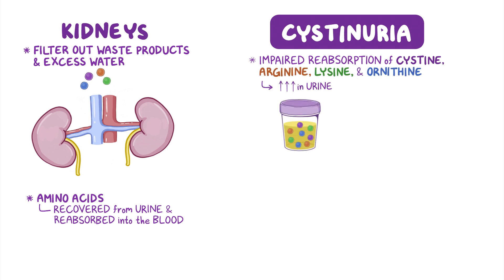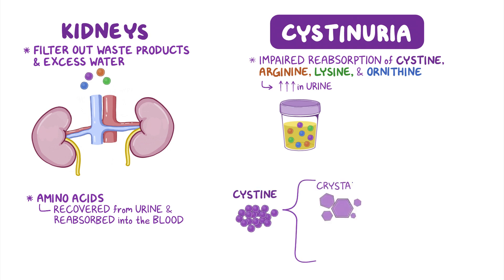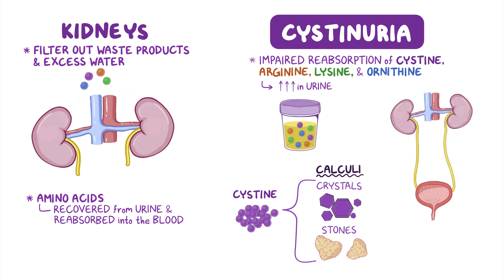At high concentration, cysteine clumps together to form crystals and stones, also called calculi. These can be found along the urinary tract, including the kidneys, ureters, and urinary bladder.